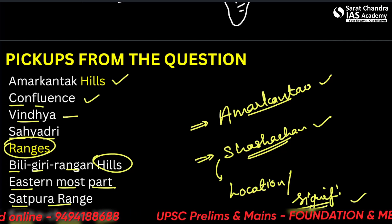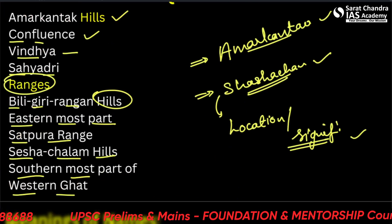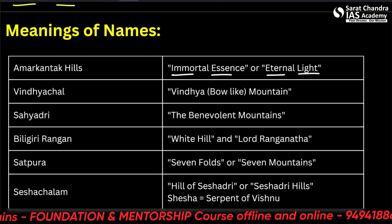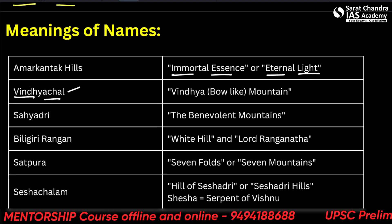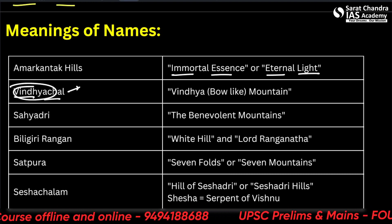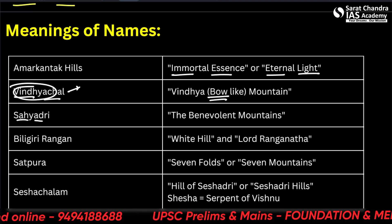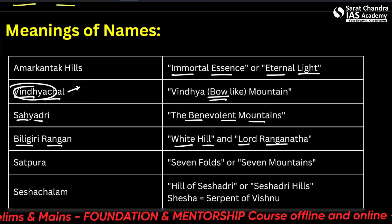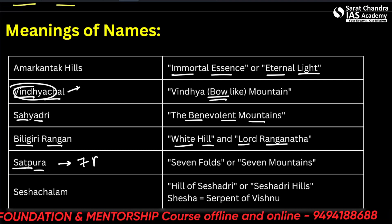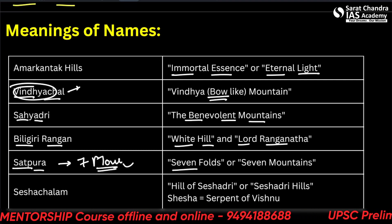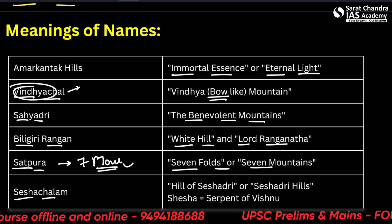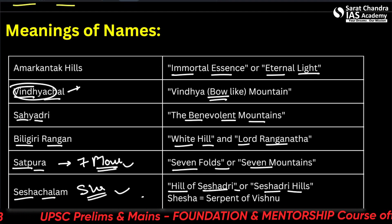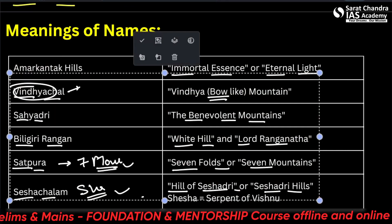Satpura means the seven mountains — sat meaning seven folds or seven mountains. Seshachalam means the hill of the Sheshadri; Sesha refers to the Sheshanag of Vishnu. Knowing these meanings makes it easy to remember their locations and significance.